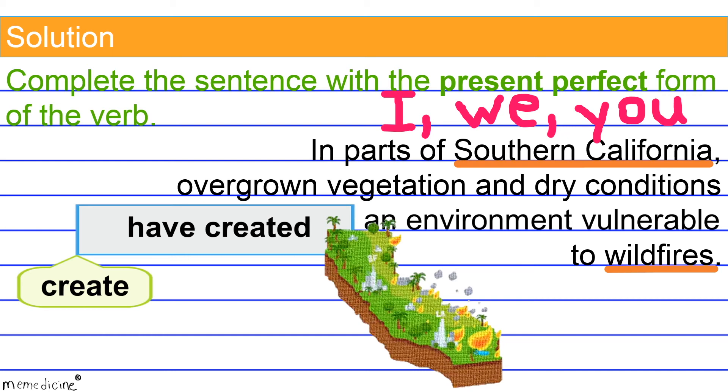The use of have created is appropriate here because the overgrown vegetation and dry conditions precipitated. And just in case you don't know what the word precipitated means, it's spelled P-R-E-C-I-P-I-T-A-T-E-D. Definitely look it up. I want you to become well-rehearsed in your vocabulary.